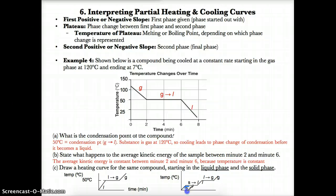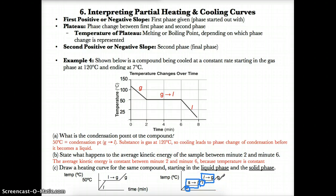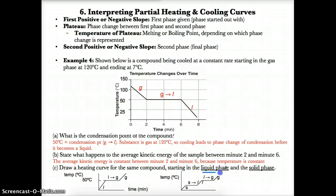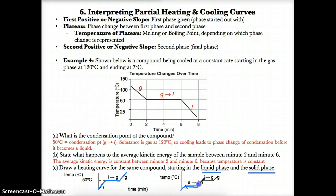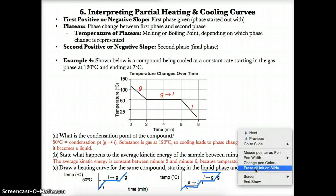If starting with a solid, you start at solid, then the next logical phase change is melting from solid to liquid, then the liquid phase, then evaporation from liquid to gas, then finally the gas phase. So it's different depending on what you start with — starting from solid gives a full heating curve with three phases and two phase changes, while starting from liquid gives a partial heating curve.